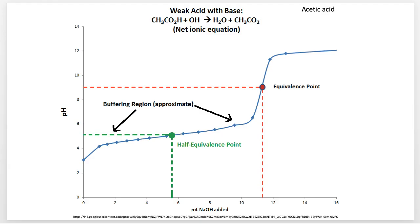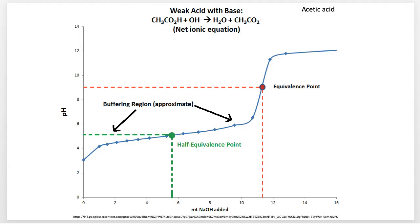Looking at a graph of acetic acid buffer: we have pH on the y-axis and volume of sodium hydroxide added on the x-axis. We can see the buffering region where pH is only varying by one or two units. However, you can overwhelm your buffer — once it's full of hydrogens, all the excess ions just spill into the solution and you get a massive, fast change in pH. That would be bad. That would kill you.